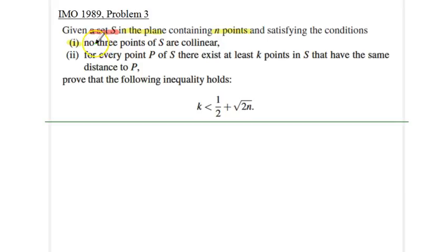First of all, no three points of S are collinear. And second, for every point P in S, there exist at least k points in S that have the same distance to P. So that condition is the critical one, so we need to make sure we understand it well. Given these two conditions, this non-collinearity condition and this distance of at least k points condition, prove that the following inequality holds: k < 1/2 + √(2n).